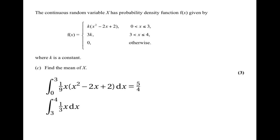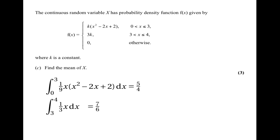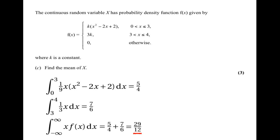For x between 3 and 4, we evaluate ∫₃⁴ (1/3)x dx. Remember k = 1/9, so 3k = 1/3, multiplied by x. That integral is [x²/6] from 3 to 4 = 16/6 − 9/6 = 7/6. So the total mean is 5/4 + 7/6 = 29/12. Therefore the mean of x is 29/12.